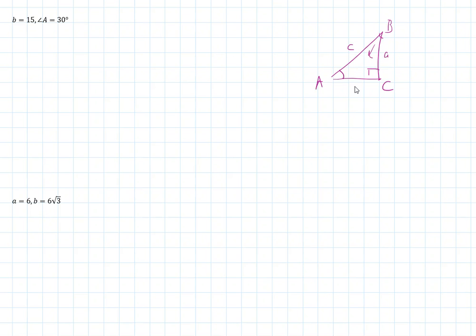For this problem here, if we call this A and that B and this C, we know that the side across from angle B, which is over here, is 15. We're told that angle A, which is this angle right here, is 30 degrees. If this is 30, this has to be the complement at 60 because the three angles have to add to 180 and 90 is taken up by the right angle, so there's 90 to split between these two, so they're complementary.